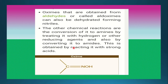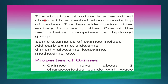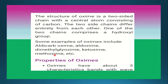Oximes can also be converted to amides by reacting with strong acids. Here is the structure of oximes: R, R1, C double bond NOH. The structure of oximes has a two-sided chain with a central carbon atom. The two side chains differ entirely from each other; one of the two chains comprises a hydroxyl group. Some examples of oximes include aldehyde oximes, aldoximes, dimethylglyoximes, ketoximes, and methoximes.